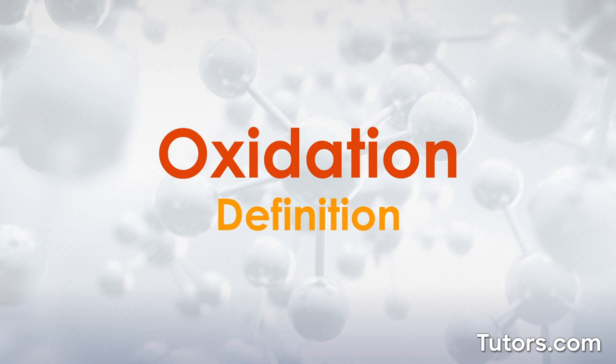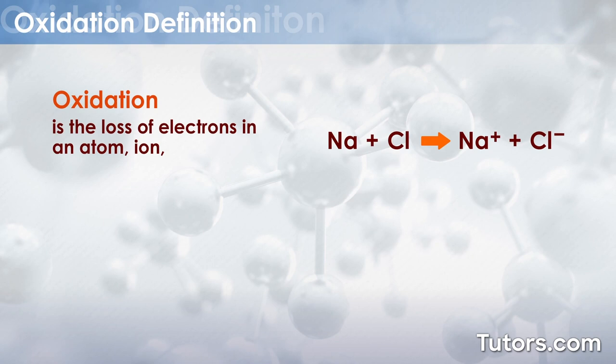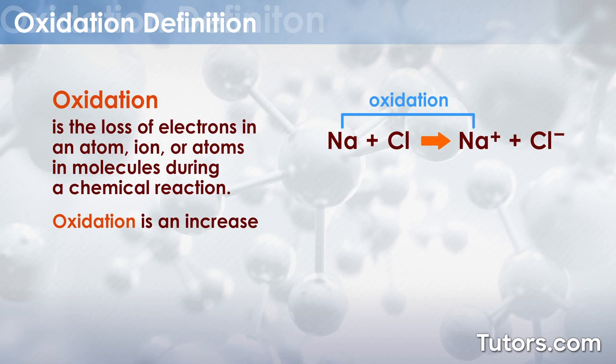Oxidation Definition. Oxidation is the loss of electrons in an atom, ion, or atoms and molecules during a chemical reaction. Oxidation is an increase in the oxidation state of an atom.